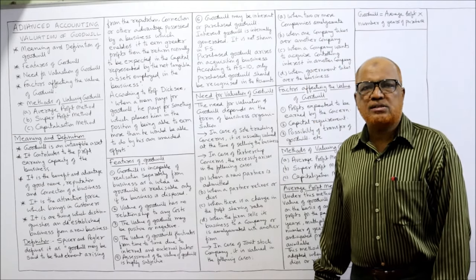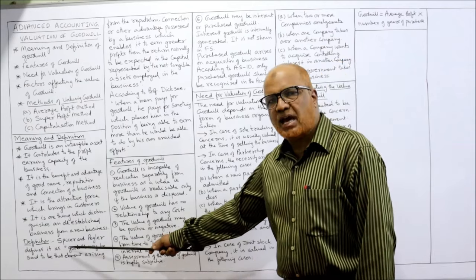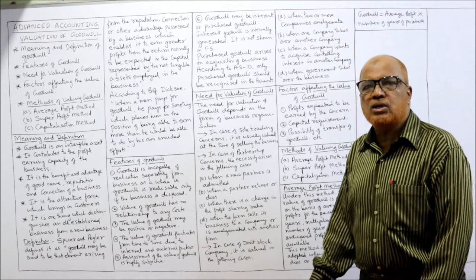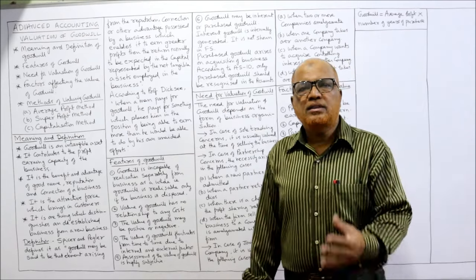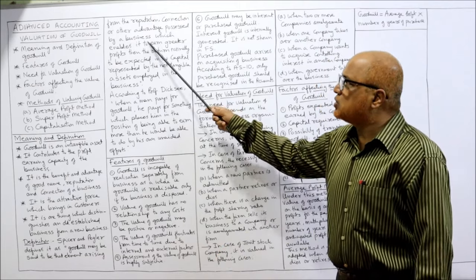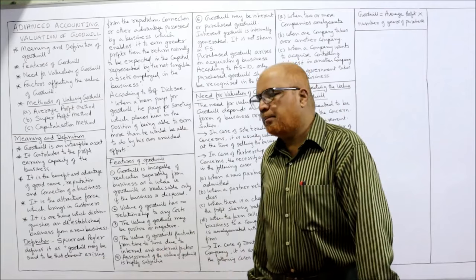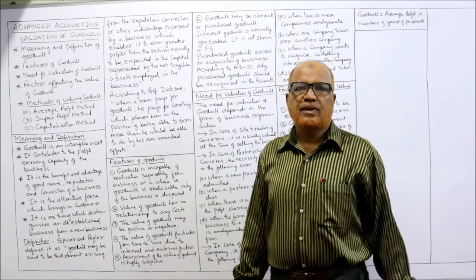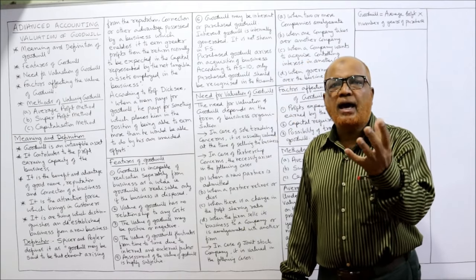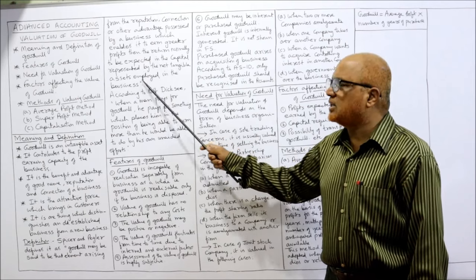Only two renowned authors' definitions I'm going to explain. First, Spicer and Pegler define it as: goodwill may be said to be that element arising from reputation, connection, or any other advantage possessed by a business which enables it to earn greater profits. So Spicer and Pegler say goodwill arises from reputation, good name, or any other advantage possessed by a business which helps in earning greater profits than the return normally expected on the capital represented by net tangible assets employed in the business.